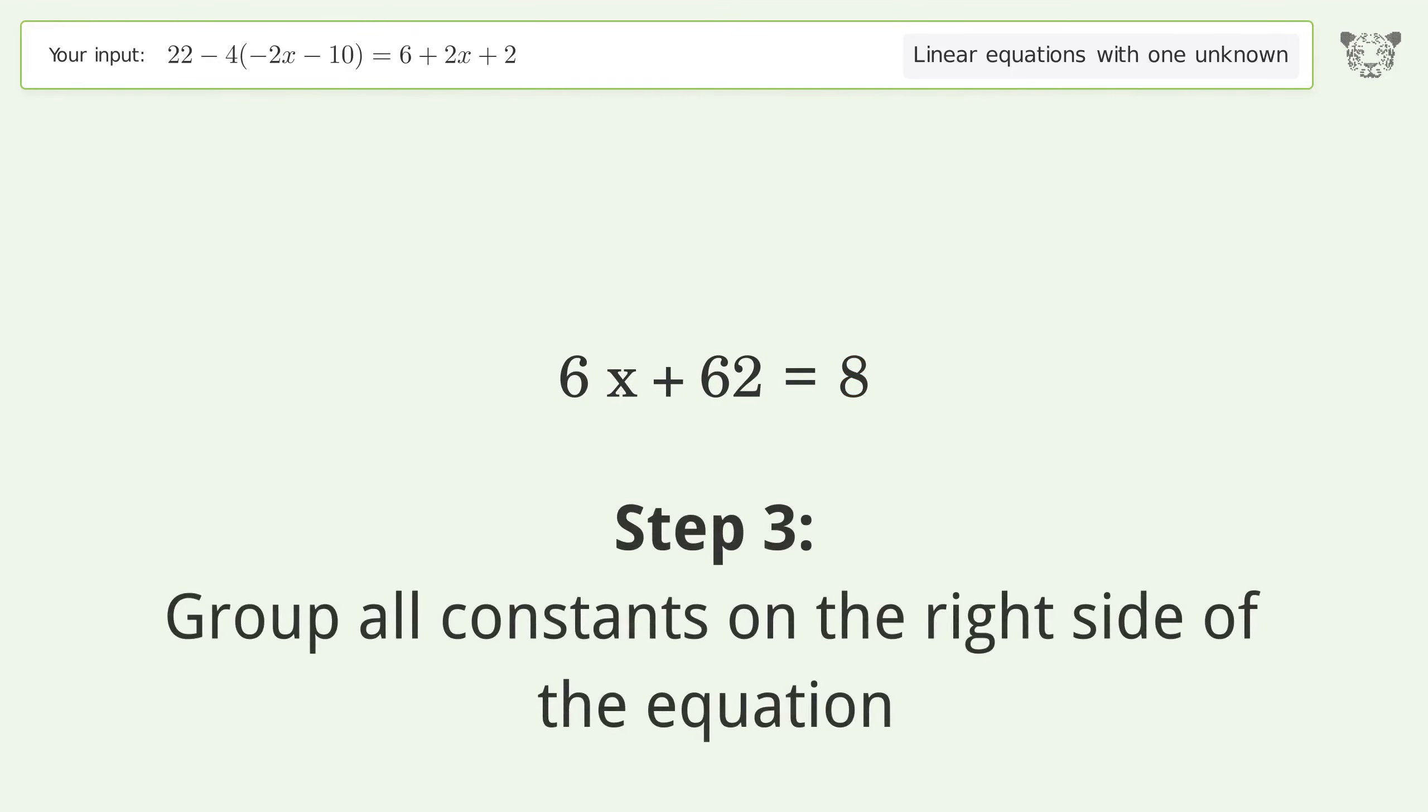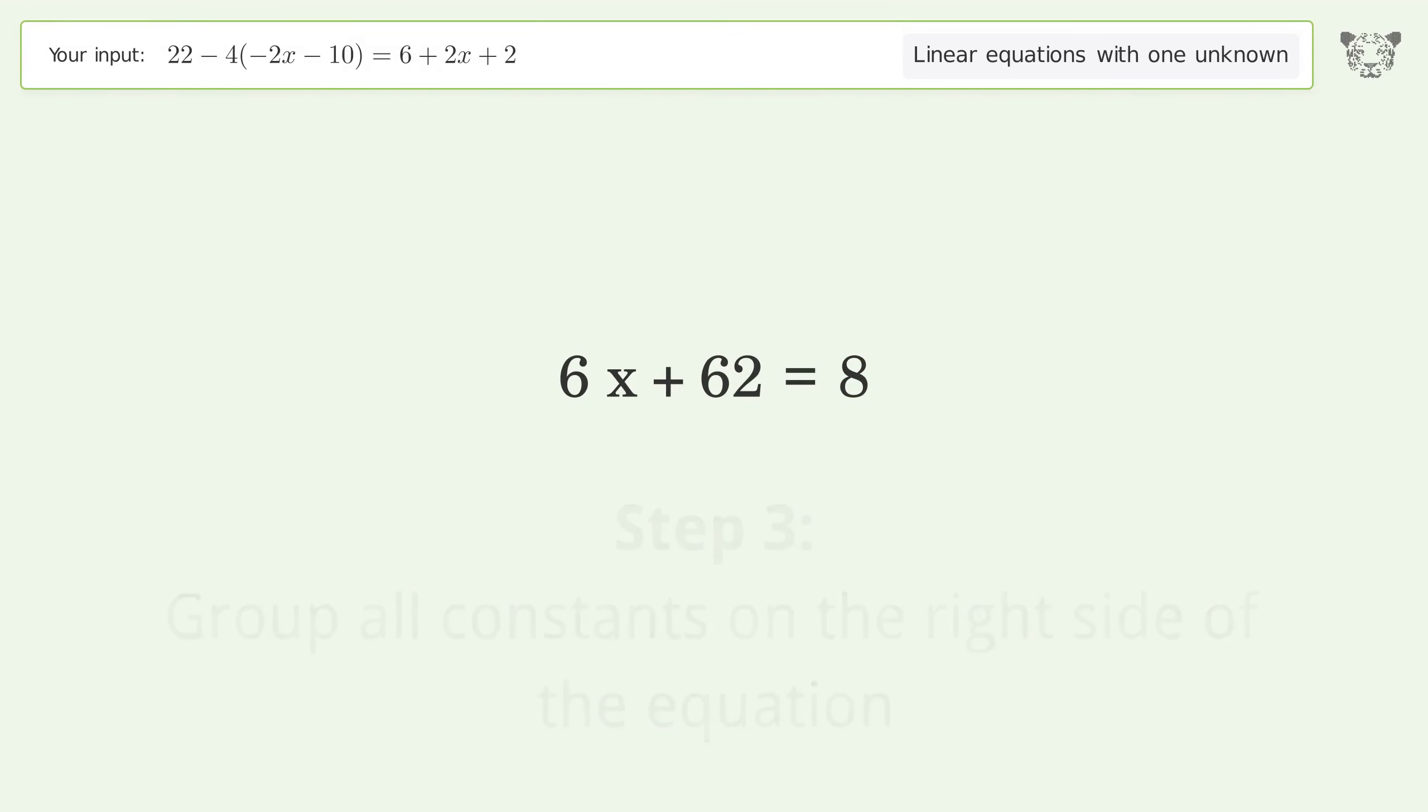Group all constants on the right side of the equation. Subtract 62 from both sides. Simplify the arithmetic.